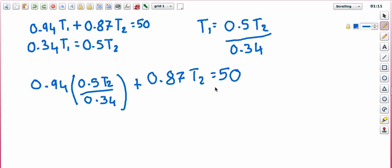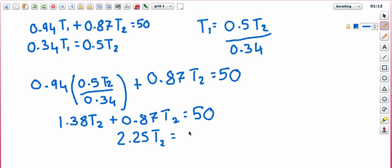Now I'm going to multiply the tops here to simplify that down. So we've got 0.5 over 0.34 times 0.94. So then we've got 1.38 T2 plus 0.87 T2 equals 50. Then add them two together, 2.25 T2 equals 50. So T2 is 50 divided by 2.25, so 22 newtons.